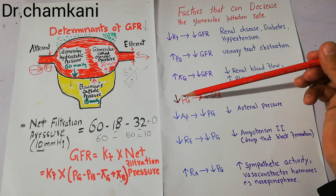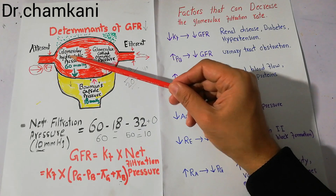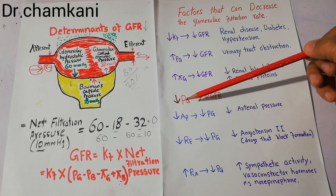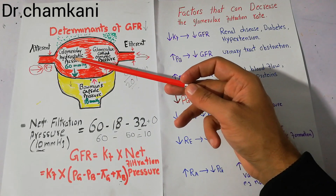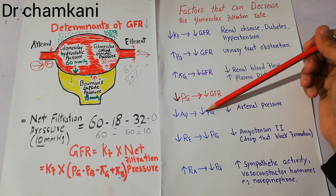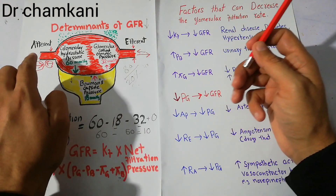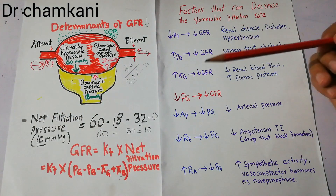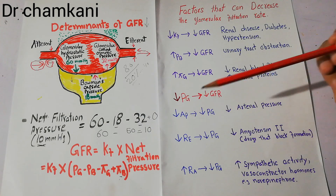Now, coming to factors which decrease glomerular hydrostatic pressure. This pressure normally favors the filtration process, so any factor which decreases it will decrease GFR. Glomerular hydrostatic pressure is due to the pressure of fluid in the blood or plasma. First, a decrease in arterial pressure can decrease glomerular hydrostatic pressure, which in turn decreases GFR. For example, due to shock or bleeding, a lot of fluid loss can occur, decreasing blood flow, which directly leads to decreased hydrostatic pressure and decreased GFR.